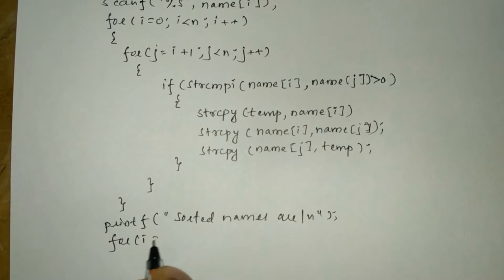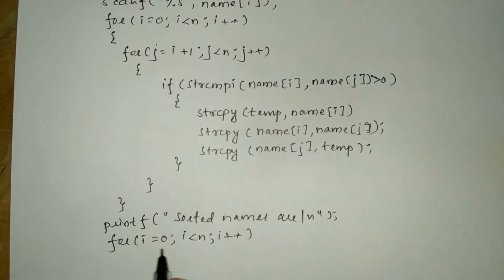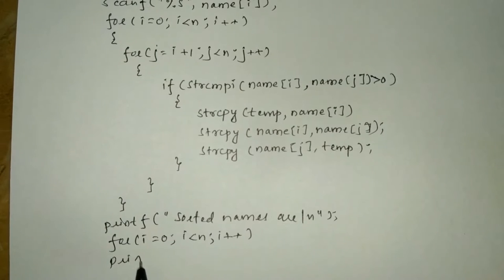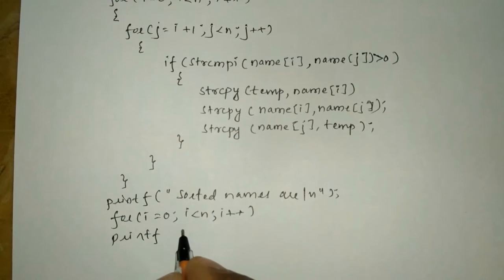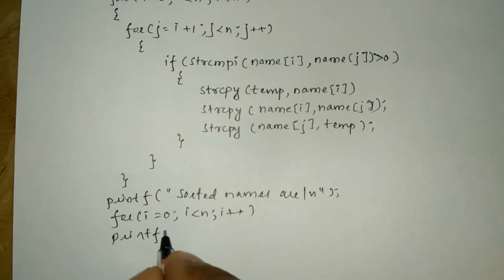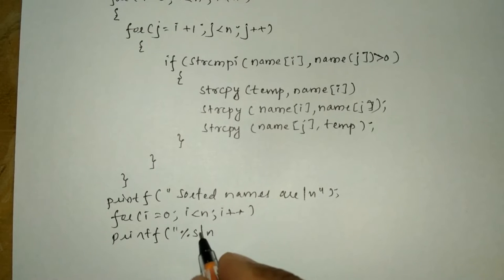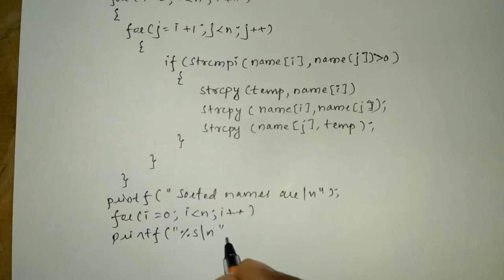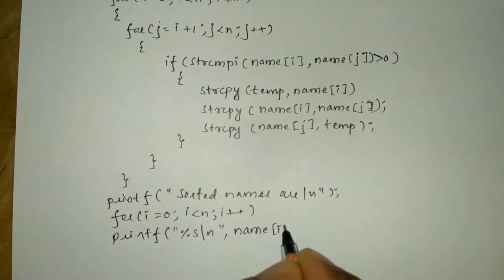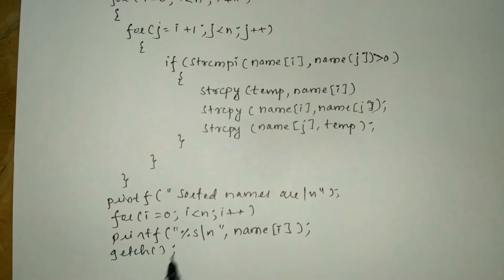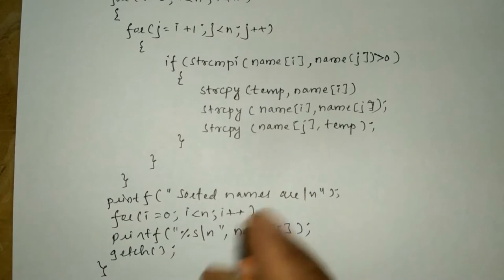Next we need to print the sorted array, so printf 'sorted names are' with backslash n and semicolon. Then a for loop with i equal to 0, i less than n, i plus plus. Inside, printf with format specifier %s and backslash n so each sorted name prints on a new line, using name of i. Finally, write the getch function and the closing curly brace.